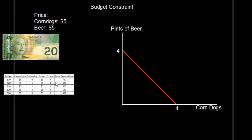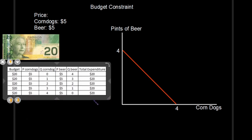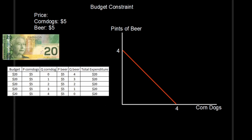We could also view this in a table, with our total budget of $20, the price of the corn dog, how many we were able to buy, and similarly the price of the beer and the quantity we could buy. These are our possible consumption bundles. If I want four pints of beer, that means zero corn dogs. Total expenditure: five times zero plus five times four gives us $20. All our consumption bundles equal $20 — we're efficiently spending all our money.